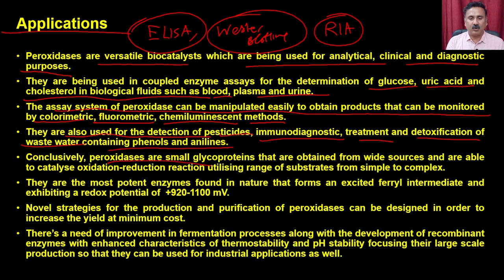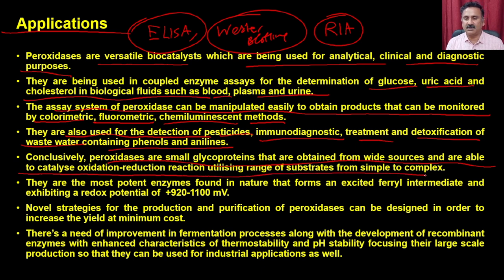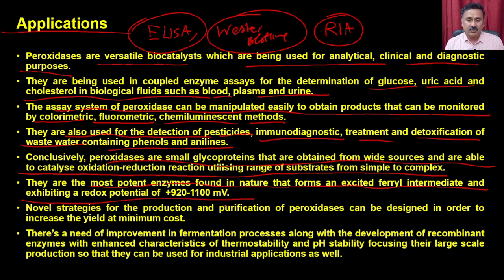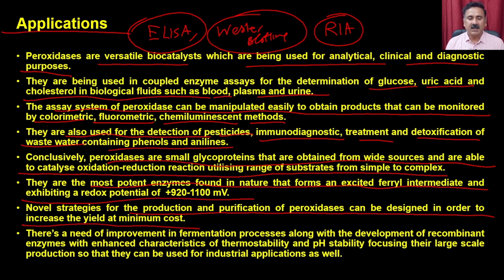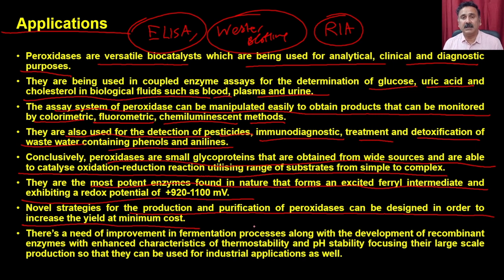Peroxidases are small glycoproteins obtained from various sources, able to catalyze oxidation reactions utilizing a range of substrates from simple to complex. They are among the most abundant enzymes found in nature, forming an excited intermediate and exhibiting a redox potential of 920 to 110 millivolts. Novel strategies for the production and purification of peroxidases can be designed to increase yield at minimal cost, and there is a need for improvement of the fermentation process to produce peroxidases in large quantities.